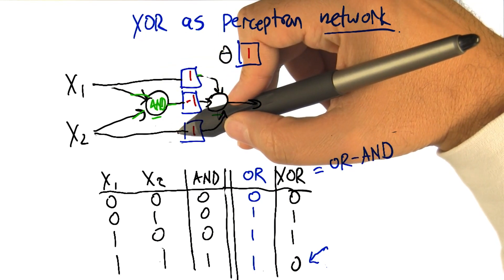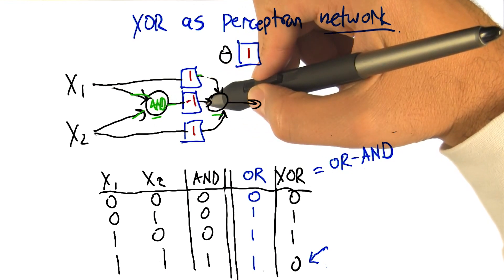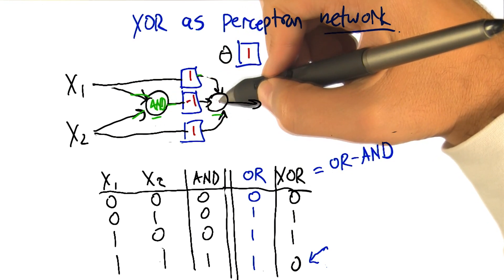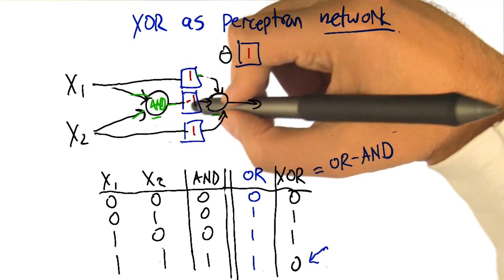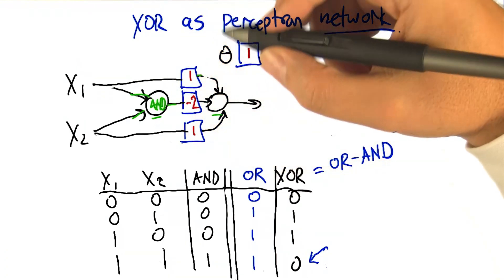But if both x1 and x2 are both on, then the sum here is going to be two minus the one that we get from the AND, which is still one. So minus one isn't enough. But maybe we can do more than that. Maybe we can do minus two. What happens if we do minus two?